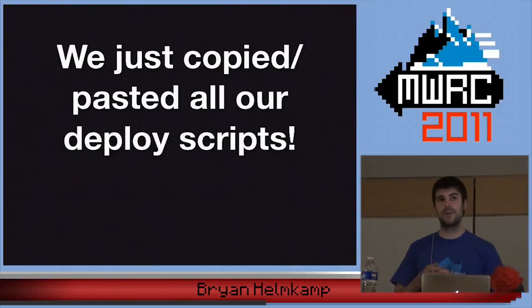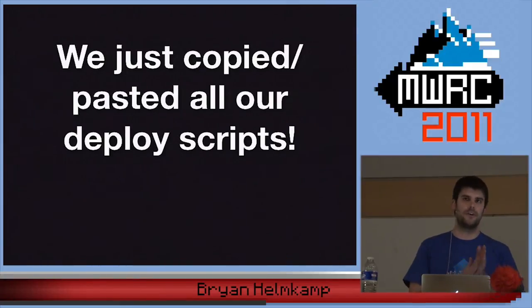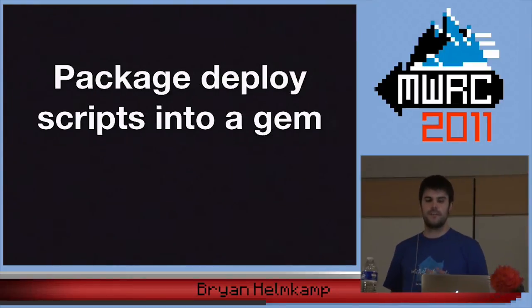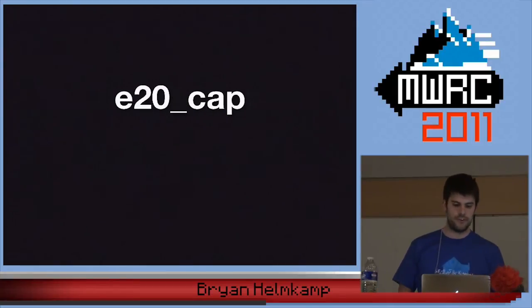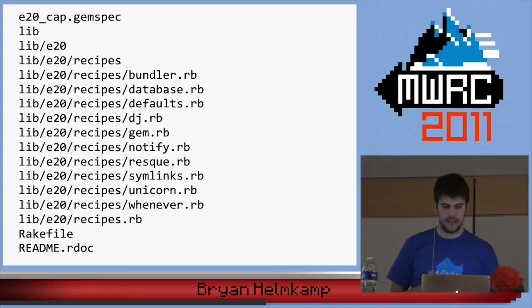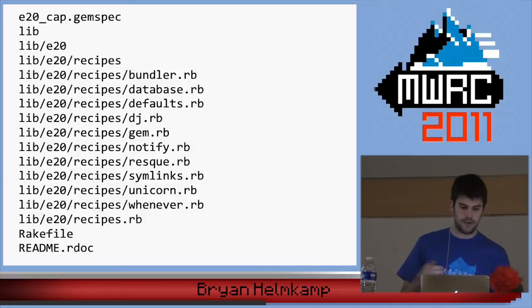That's bad, but the worst part is that they're going to start to diverge in very subtle and potentially destructive ways — cp-restart might do something in one directory but something subtly different in the other. So we packaged our deploy scripts into a gem called e2o cap. Similar to the EY cap gem, it has a recipes directory with a Ruby file for each deployment concern.